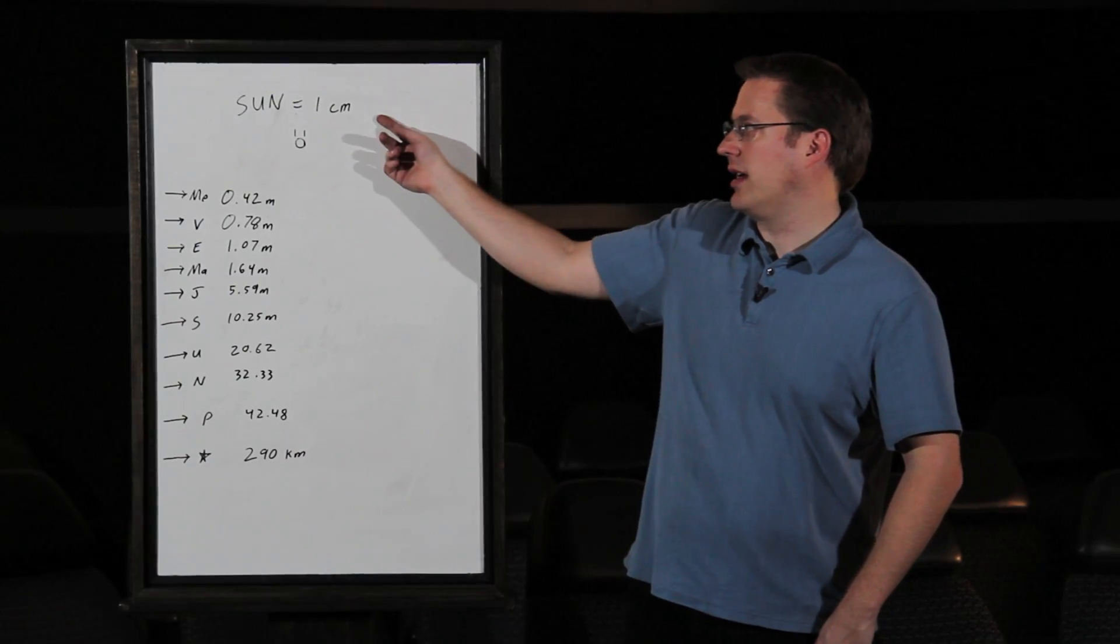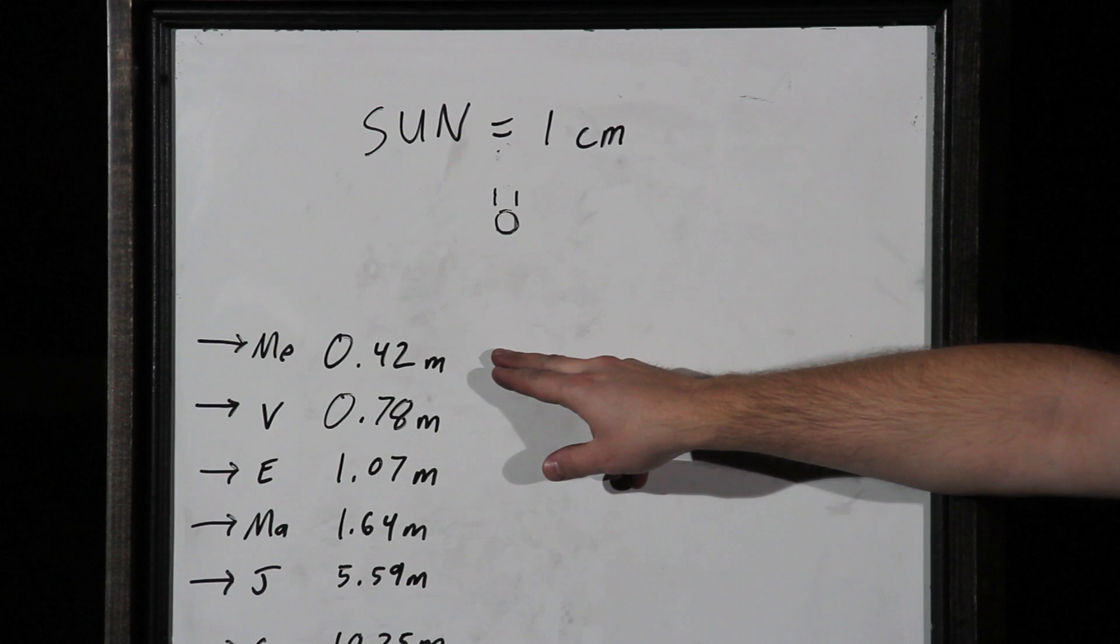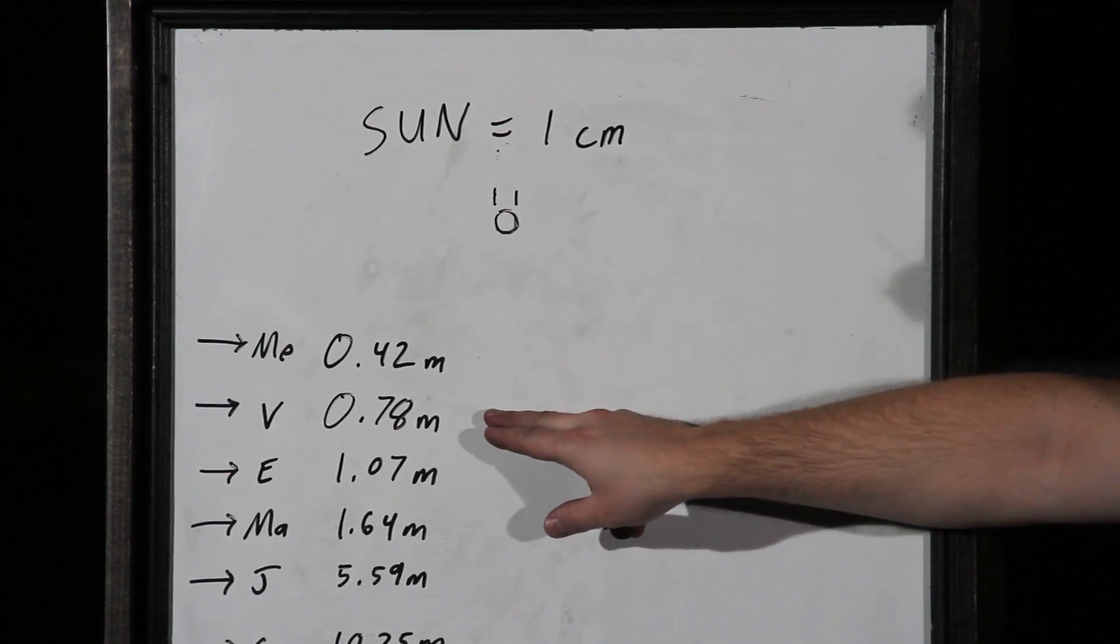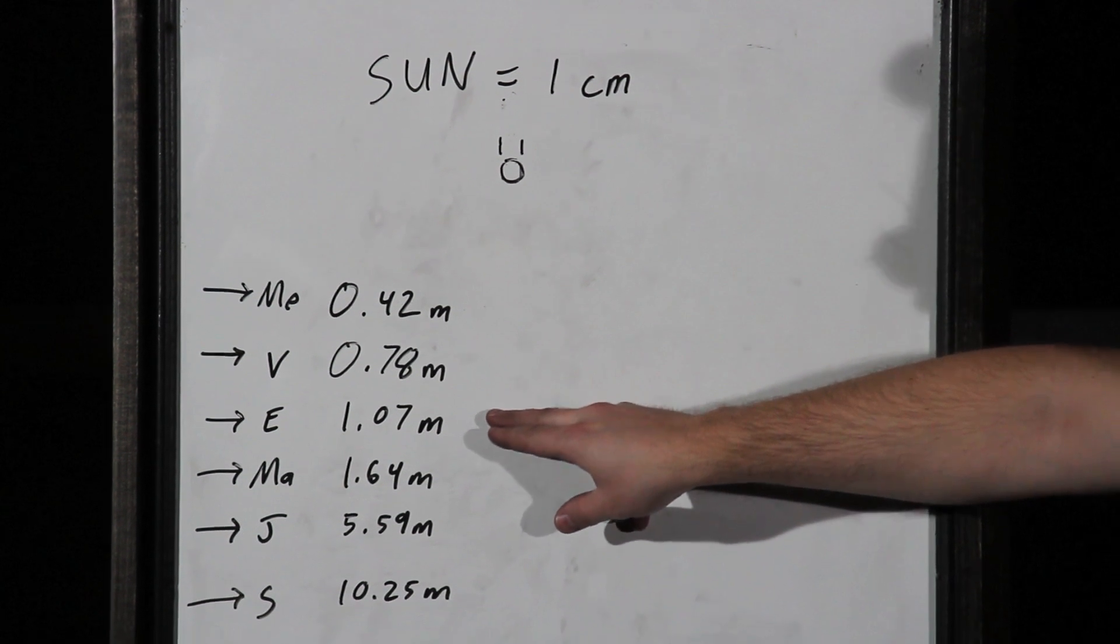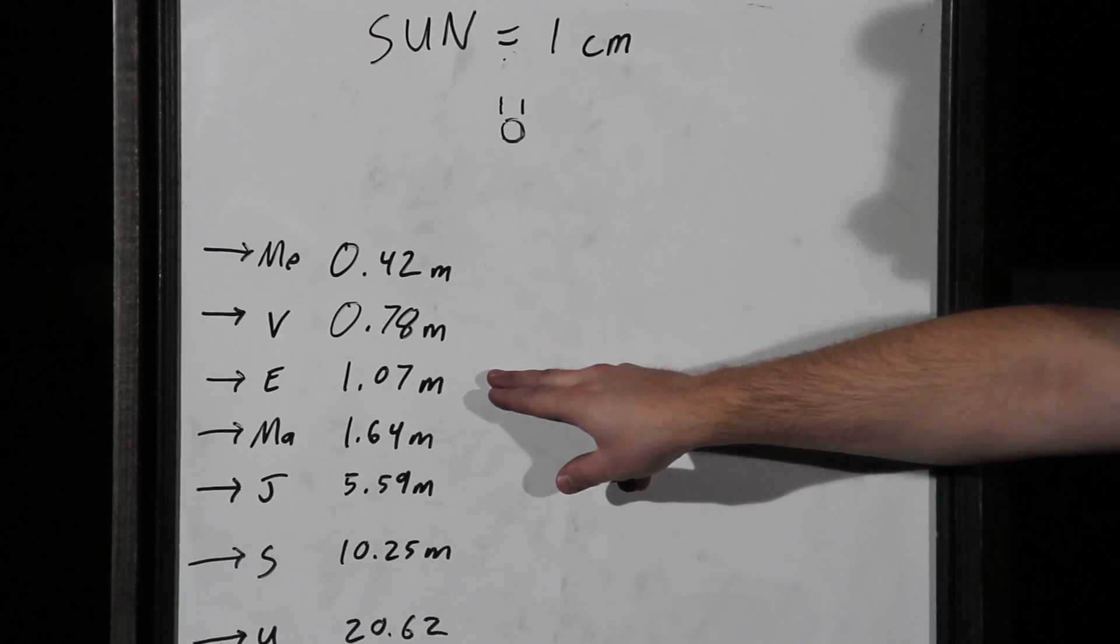I left these all in metric since we're asking about centimeters. Mercury is about 0.42 meters away. Venus is almost a meter, not quite, 0.8. Earth is a little more than a meter away. Mars is a meter and a half.